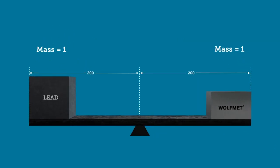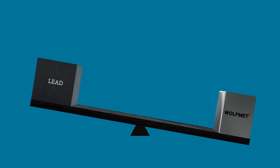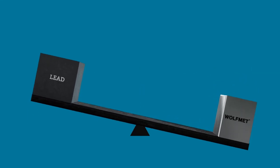Now if we reorientate the WolfMet weight upright, the centre of gravity shifts and the balance again tips. This shows that a greater moment is exerted by the WolfMet for the same mass and height.